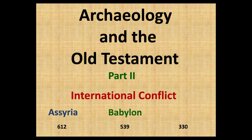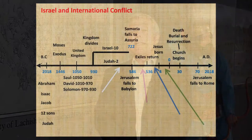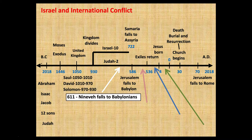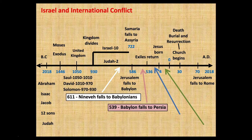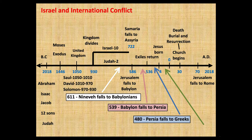As we continue our look at archaeology and the Old Testament, we are dealing in this section with some international conflict between Israel and its neighbors. The nation of Israel became powerful and expanded, interacted, and conquered several times. Nineveh fell in 611 to the Babylonians. The Babylonians also had much conflict with the Israelite nation, but Babylon was destroyed in 539 BC by the Persians. Persia had problems later with the Greeks, who rose to power around 480 at the Battle of Salamis. The next major world empire was the Romans, who came in the first century BC to have an impact on Israel as well.